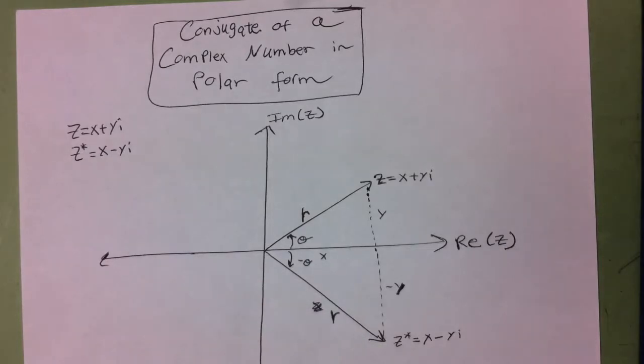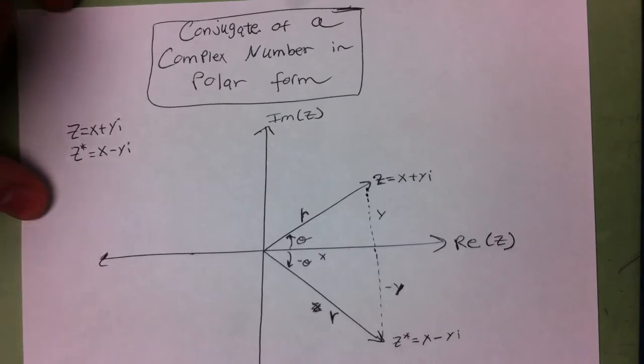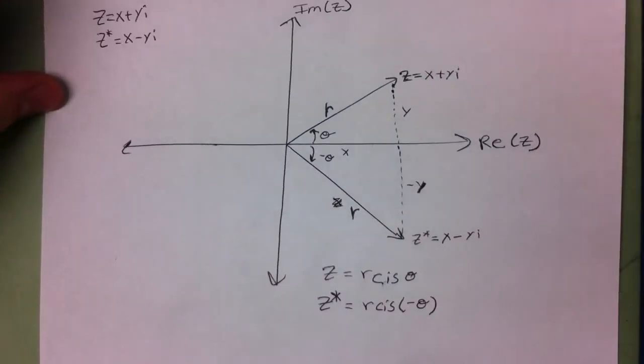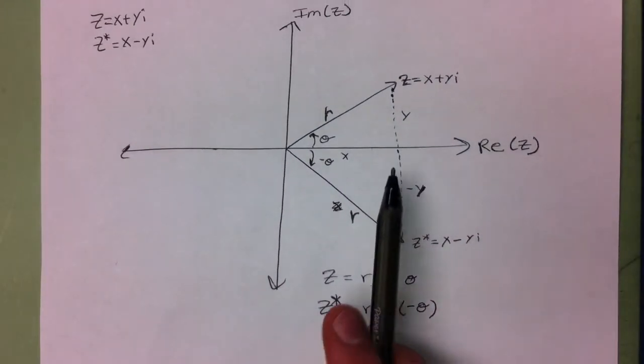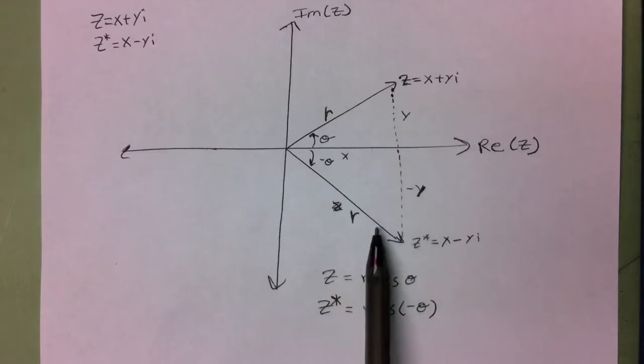And so in this video, we're just going to talk about what that looks like in polar form. So just like in rectangular form, the conjugate is just the number reflected across the real axis.